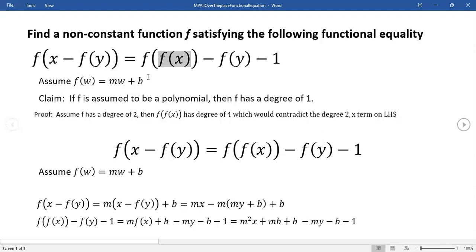So because of a degree conflict, the only way a polynomial can be a solution to this would be if it's linear. So that's the claim. I'm going to stick by that.